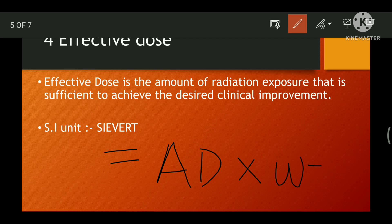Effective dose is equivalent to absorbed dose multiplied by the tissue weighting factor. The tissue weighting factor is a measure of the effectiveness of the radiation type. The SI unit for effective dose is Sievert — important for objective-type questions.